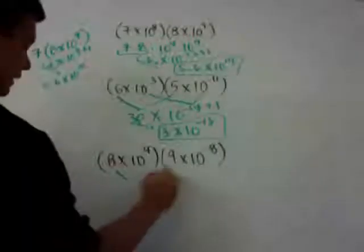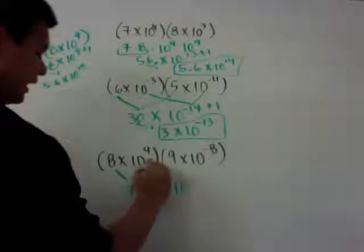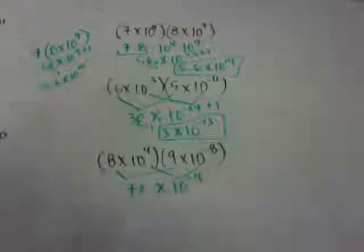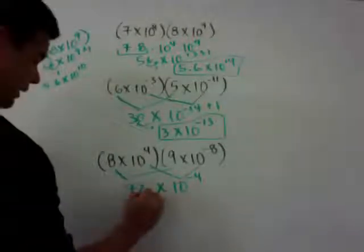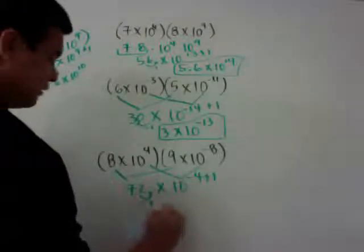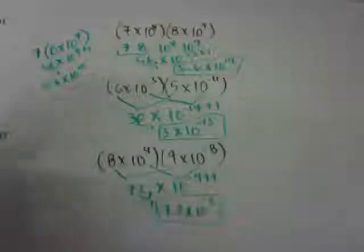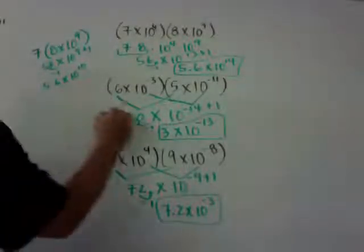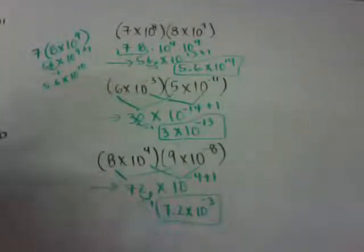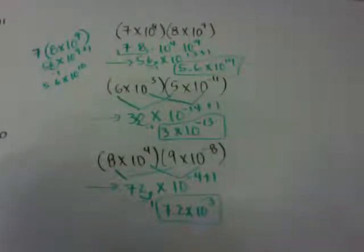One more quick example: 9 times 8 is 72, and 4 plus negative 8 is negative 4, so 72 times 10 to the negative 4th power. Moving the decimal gives 7.2 times 10 to the negative 3rd power. Make sure you show this step in your work — don't just write the answer. You need to write the 72 times 10 to the negative 4 and show that you're moving the decimal. That's section 8.3, I hope it helps.